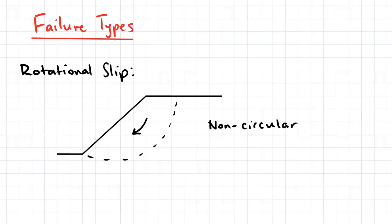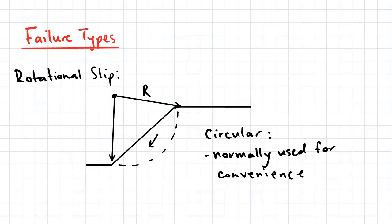There are several ways in which a slope can fail. Rotational slip occurs when a slip surface occurs along a curved path. The slip surface is typically modeled as being circular for convenience.